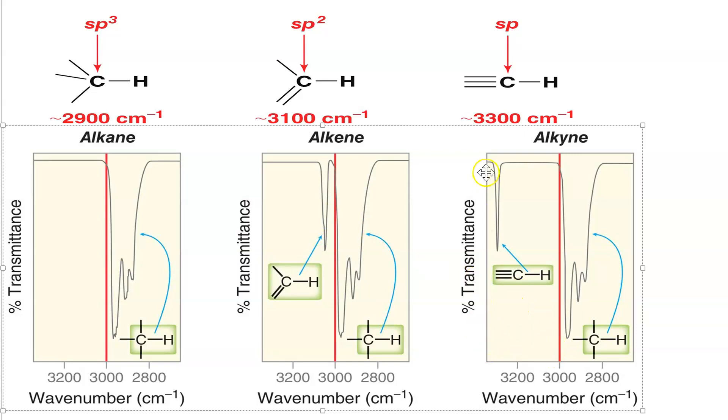And if you see this sharp band at 3100, that, my friends, is from a terminal alkyne. However, you will not see this in an internal alkyne.